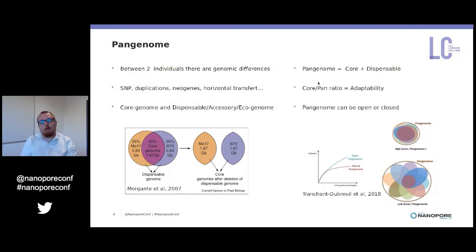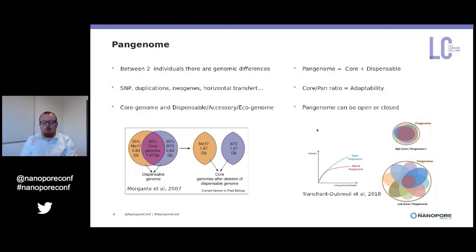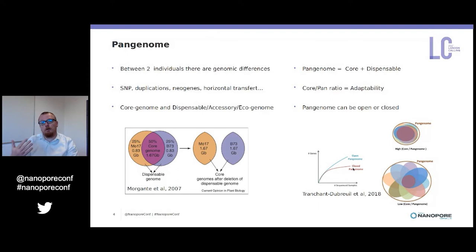The pan genome itself is the addition of the core and the dispensable genome, and the ratio between core and pan is a metric for the adaptability of a species — the higher the ratio, the better the adaptability. In addition, a pan genome can be open or closed. An open pan genome means that the more individuals you add, the more new sequences you find. At some point the pan genome becomes closed, meaning no new variation arises when you add a new individual.